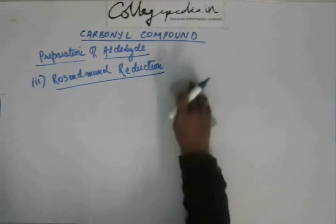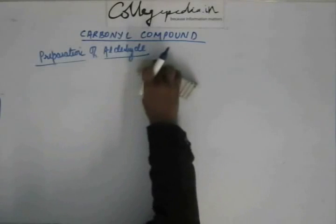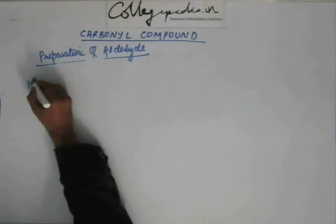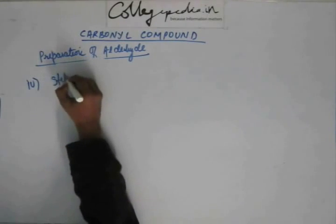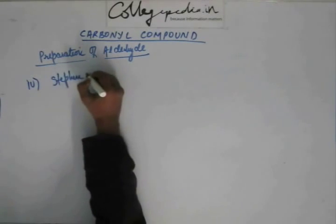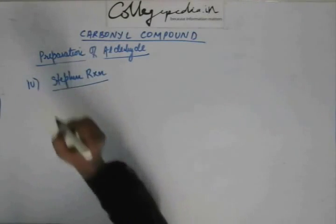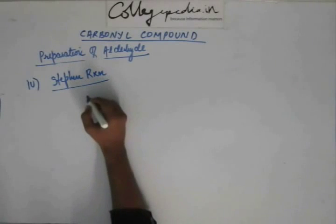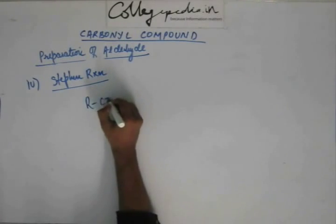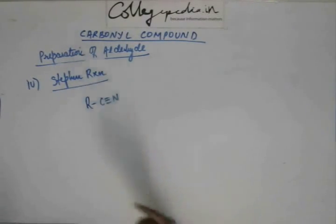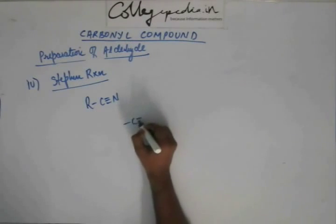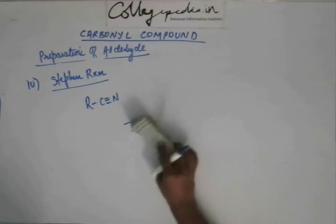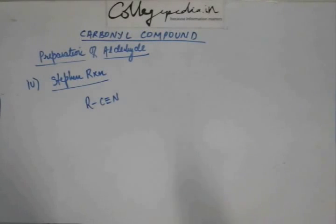Reaction number four that we are going to study is Stephen reaction. In Stephen reaction what happens, we start with a cyanide. This C triple bond N and this group is a cyanide. I hope you know this. If you don't know, know it from now. This is cyanide.